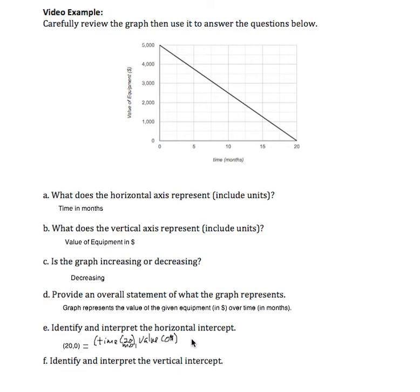If I'm asked to interpret the horizontal intercept, what it means is that after 20 months, the equipment is worth 0 dollars.